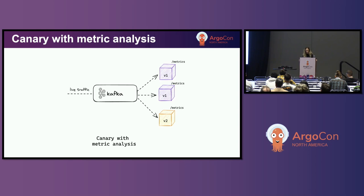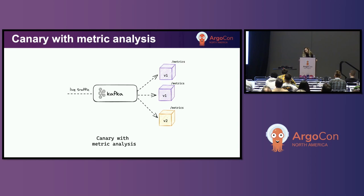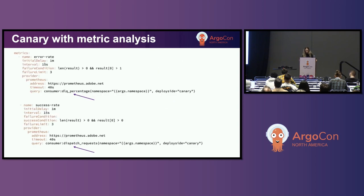So what we ended up doing is a canary with metric analysis. All my pods expose an HTTP endpoint for metrics, which is being scraped by a Prometheus instance. The canary is running with live traffic and we assess how well it's doing by using some key metrics. The key metrics for our use case are error rate, which should not be greater than 1%. The error rate in our system means we are not able to process messages and are parking them on a dead letter queue.